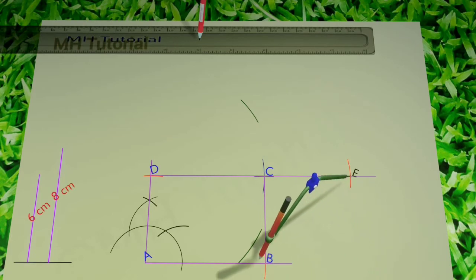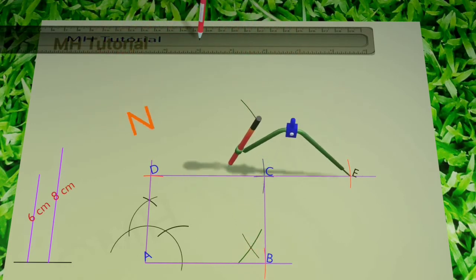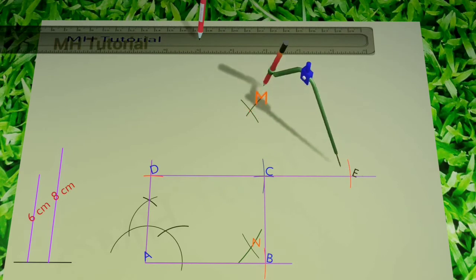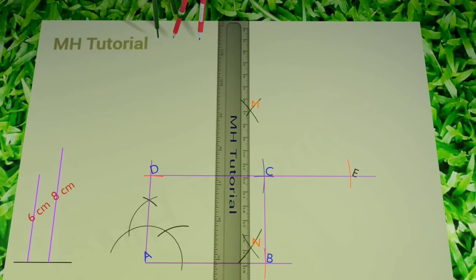Then two more arcs will be drawn from point E. The arcs intersect at points M and N. M and N are joined using scales and pencils.